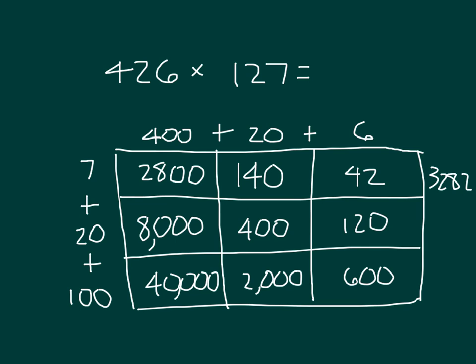8,000 plus 400, that's 8,400, plus another 120, is 8,520. And then lastly, we have 40,000 plus 2,000, which is 42,000, and then plus the 600 is 42,600. That last partial product is 100 times 426, so that does make sense there.